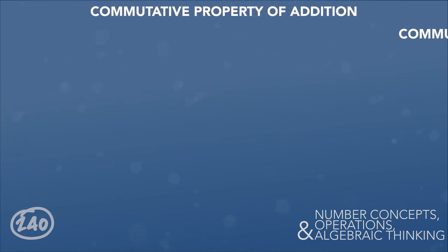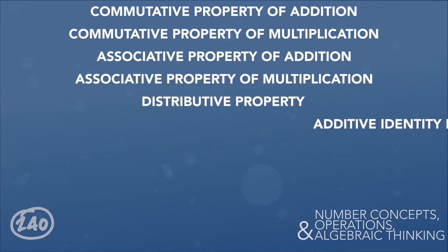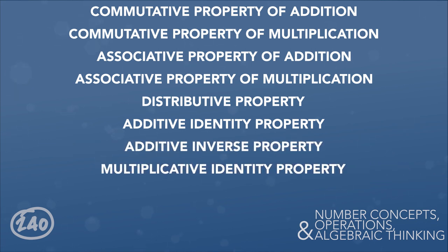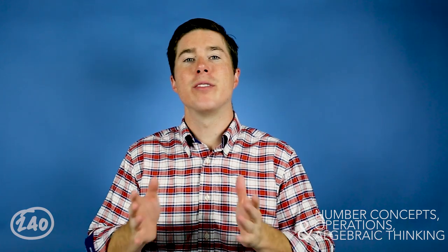Here are the properties of mathematics you really need to know — they're foundational and likely to come up on the test. Pause the video and write these down: commutative property of addition, commutative property of multiplication, associative property of addition, associative property of multiplication, the distributive property, additive identity property, additive inverse property, multiplicative identity property, and multiplicative inverse property. A 240 Tutoring study guide will break all of these down with examples and authentic test questions, though Wikipedia can also work as a starting point.